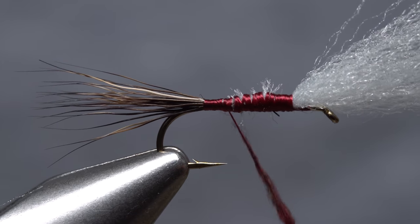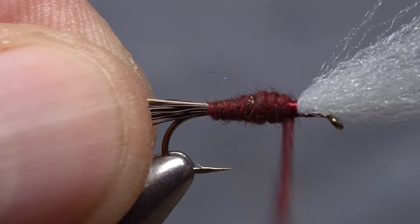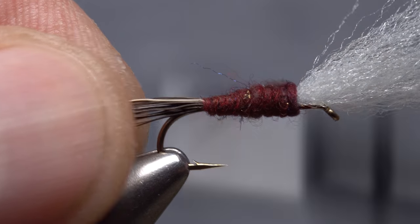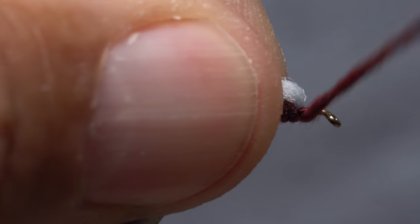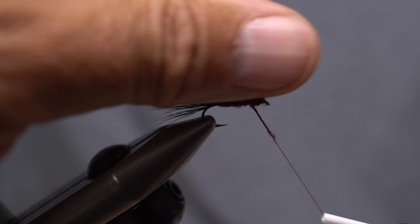Take wraps with the noodle so the dubbing begins right at the base of the tail, then make touching wraps forward creating a carrot shaped body on the fly. When you reach the wing post, pull it back and build up a dam with the dubbing noodle in front of it to hold it in the vertical position.